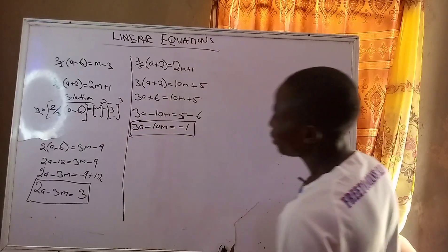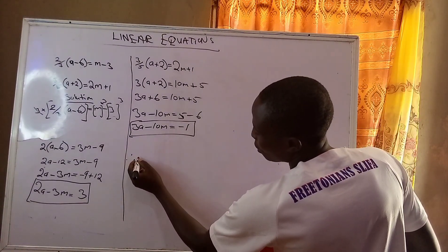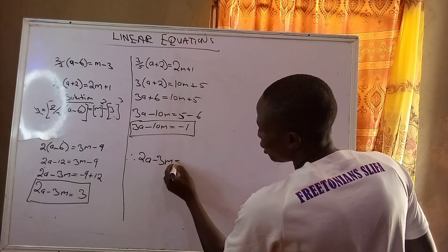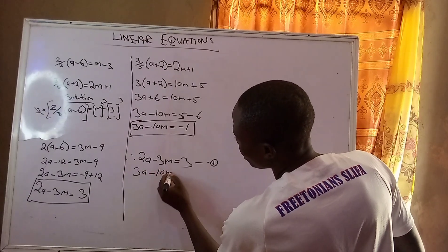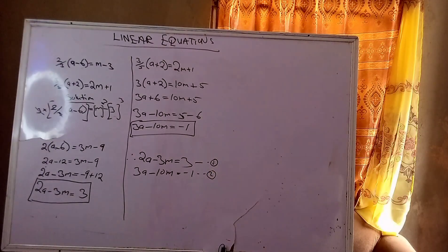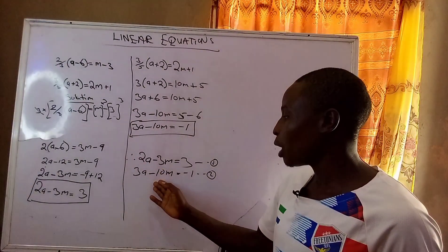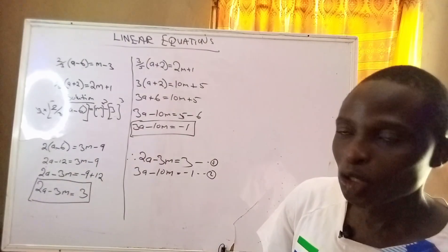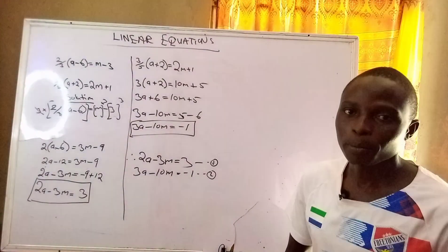Now I have a comprehensive set of simultaneous equations. Equation one is 2a minus 3m equals 3. Equation two is 3a minus 10m equals negative 1. Thank you for watching this video. You can check my previous videos on how to solve simultaneous equations using substitution or elimination method to solve this particular system. Thank you so much, bye.